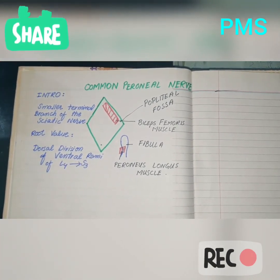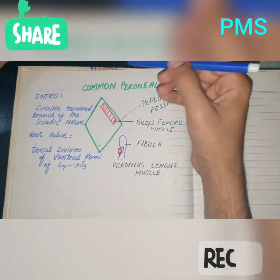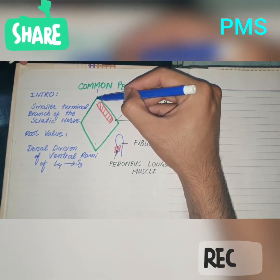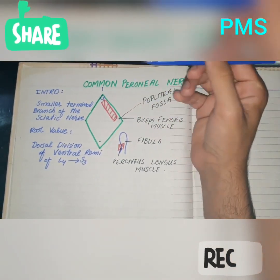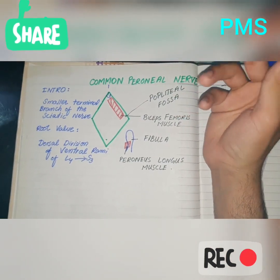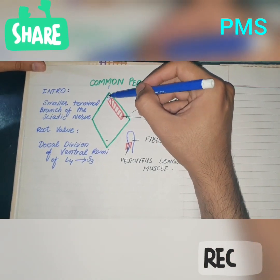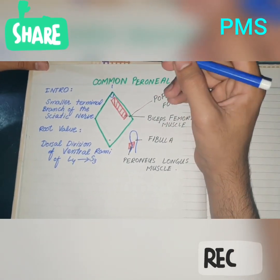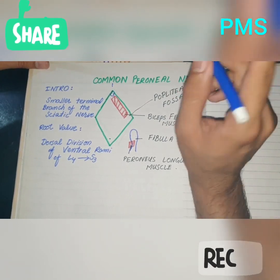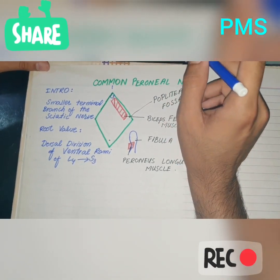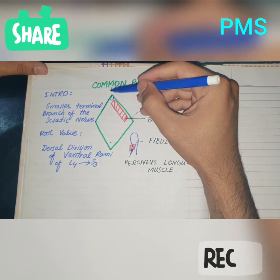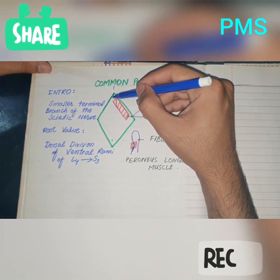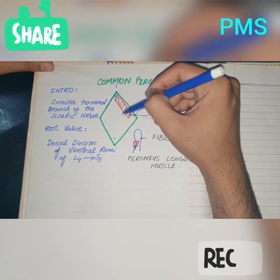Let's talk about the course of the common peroneal nerve. The sciatic nerve terminates at the superior angle of the diamond-shaped popliteal fossa into two terminal branches: the tibial nerve and the common peroneal nerve. The common peroneal nerve then descends downwards and laterally.